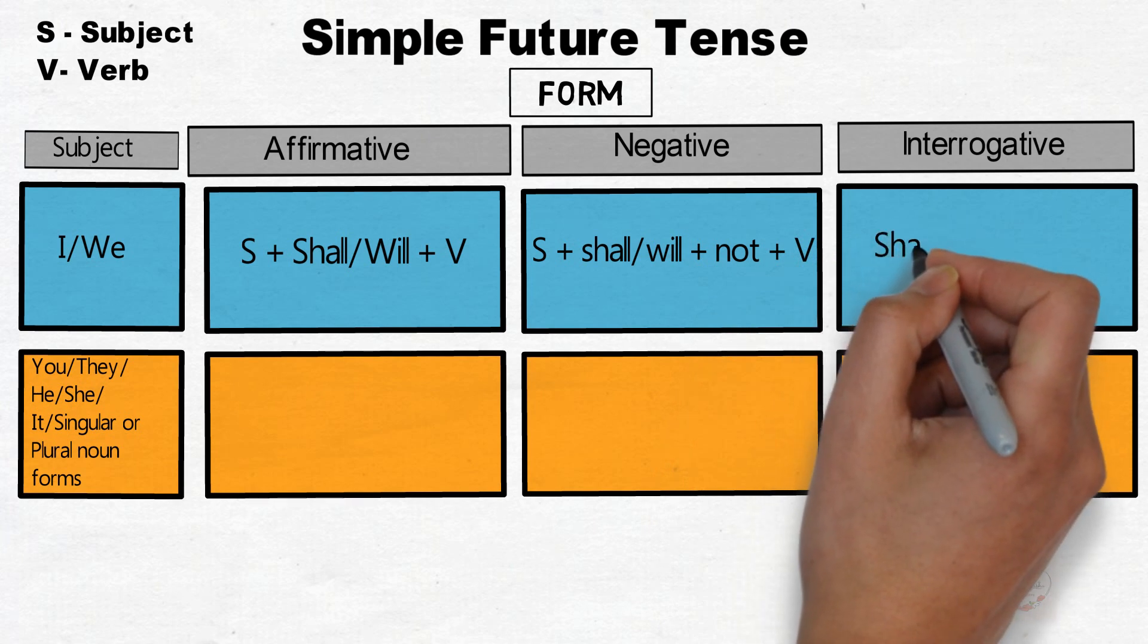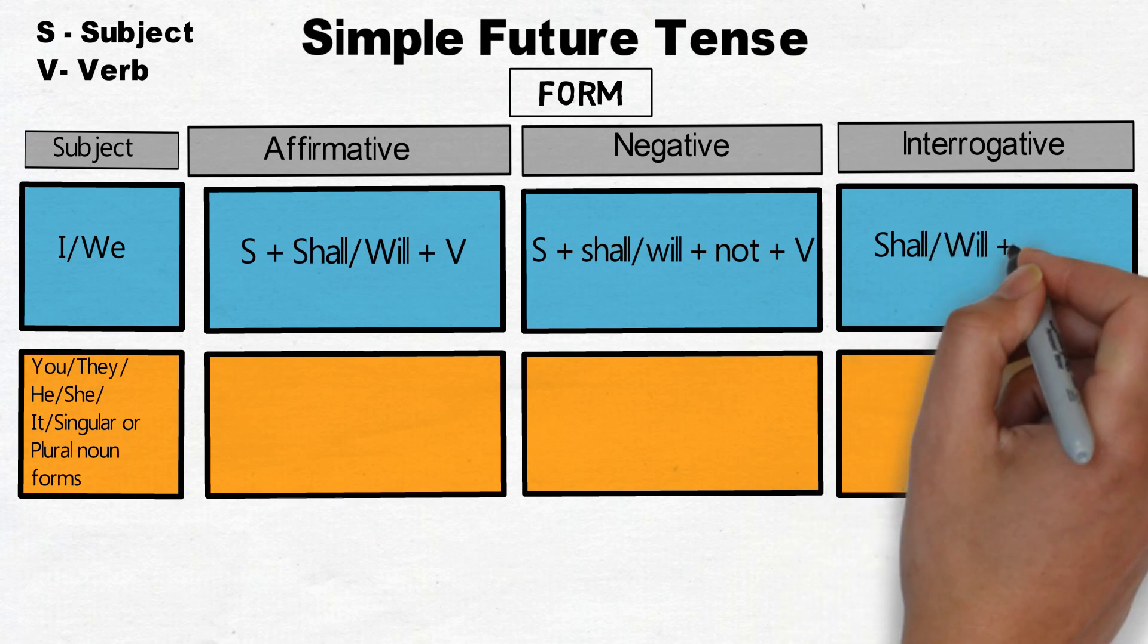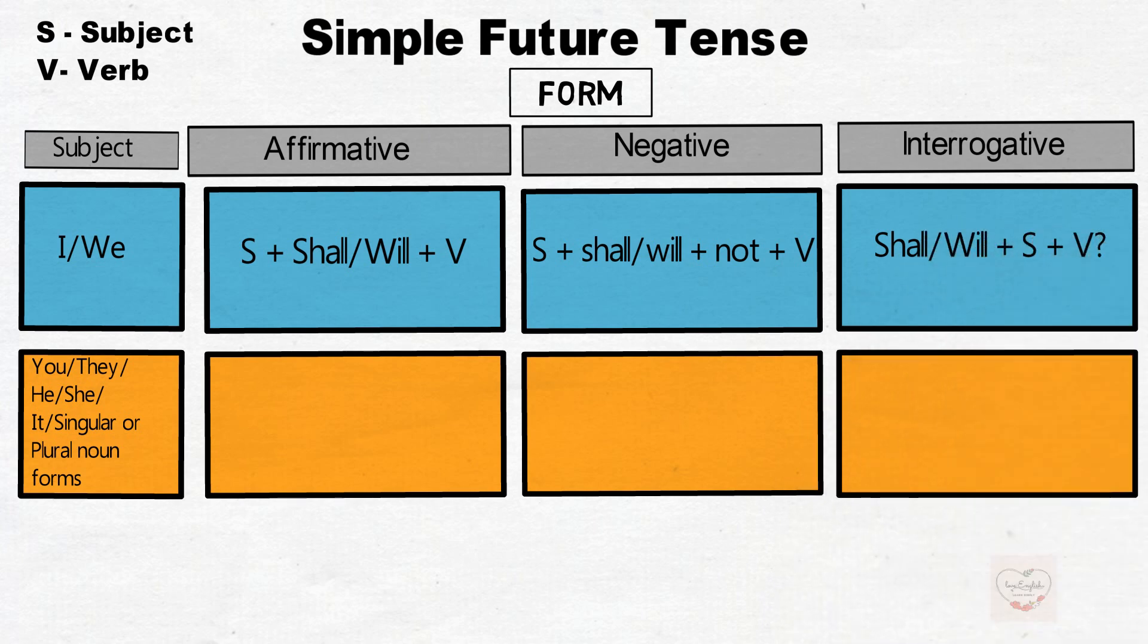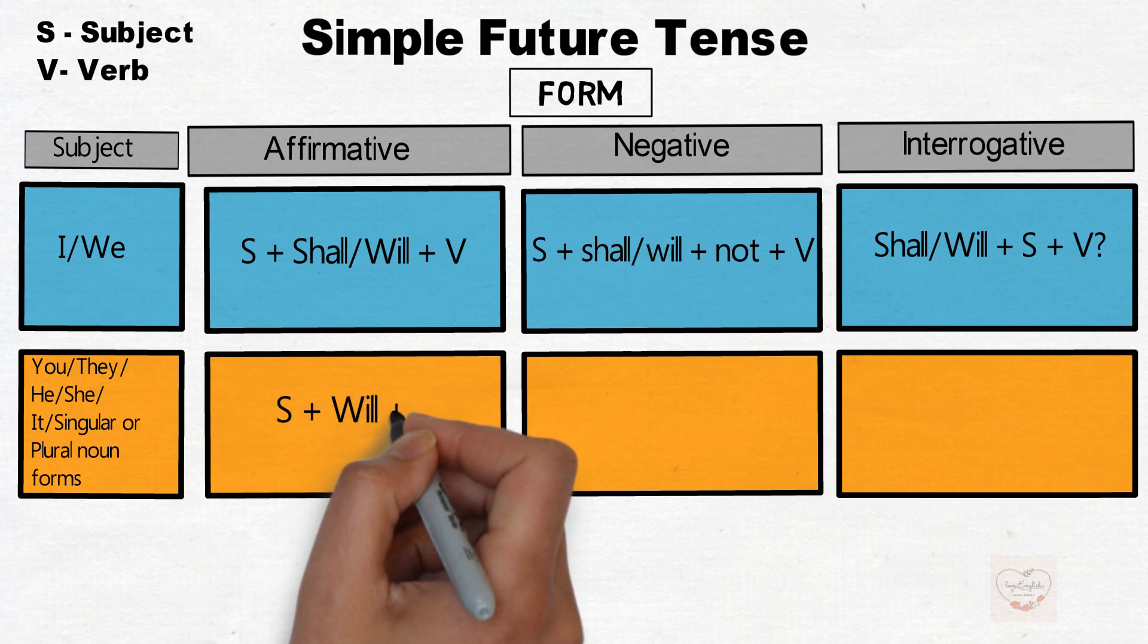Interrogative will be shall or will plus subject plus verb. We can use either shall or will with the subjects I and we, but in modern English, will is preferred to shall. If any other noun comes as a subject...